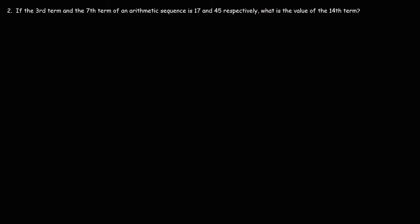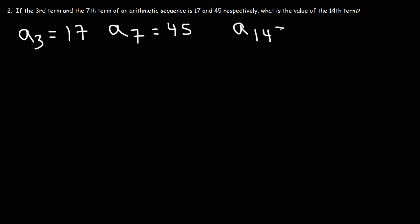Now let's work on another problem that is related to the topic. If the 3rd term and the 7th term of an arithmetic sequence is 17 and 45 respectively, what is the value of the 14th term? So let's write down what we know. We know that the 3rd term is equal to 17, and the 7th term is equal to 45. What is the value of the 14th term? That's what we're trying to find in this problem.